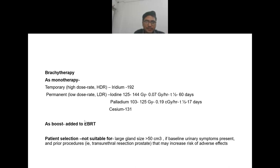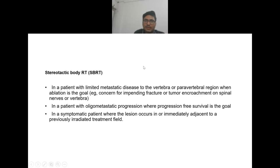Brachytherapy can also be used as a boost added to EBRT. Patient selection: brachytherapy is not suitable for large gland size (more than 50 cc), if baseline urinary symptoms are already present, or if there has been a prior TURP because it increases the risk of adverse effects. Stereotactic body radiotherapy can be used in patients with limited metastatic disease to vertebral or perivertebral regions when ablation is the goal (concern for impending fracture or tumor encroachment on spinal nerves).